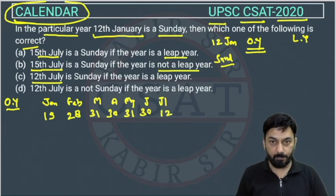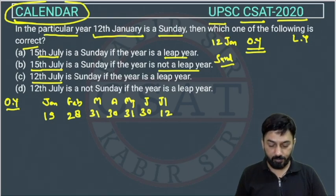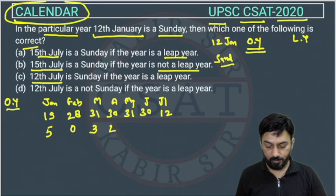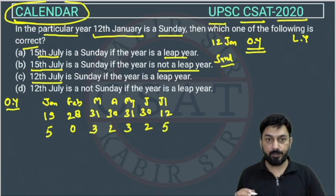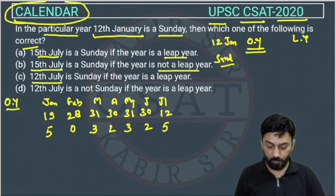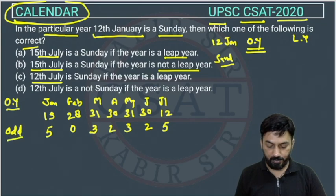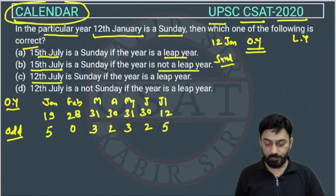Now we will find the odd days — we divide by 7. For 19: remainder is 5. For February 28: 0 odd days. For March 31: 3 odd days. For April 30: 2 odd days. For May 31: 3 odd days. For June 30: 2 odd days. And 12 days gives 5 odd days. Total: 5 + 0 + 3 + 2 + 3 + 2 + 5 = 20 odd days.